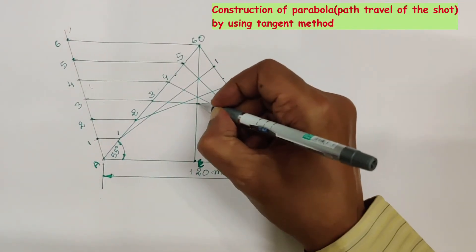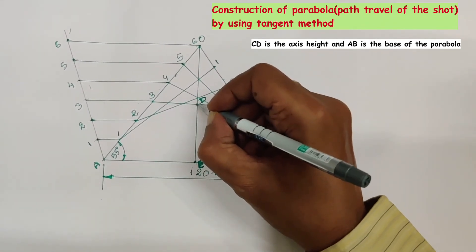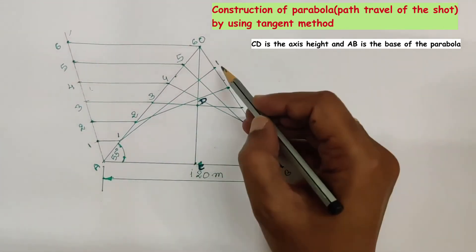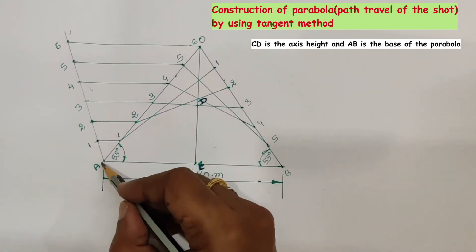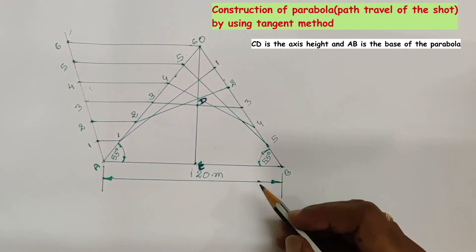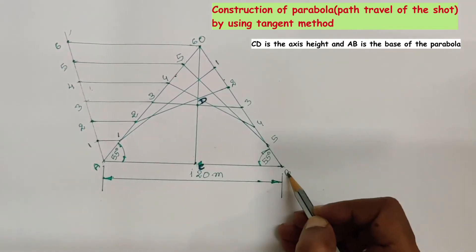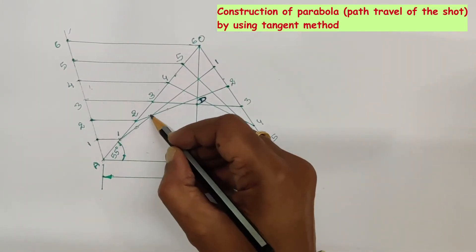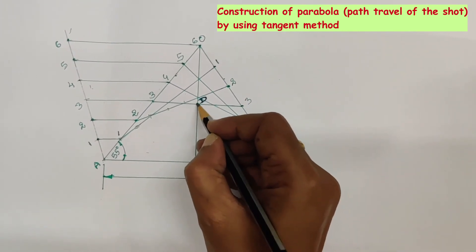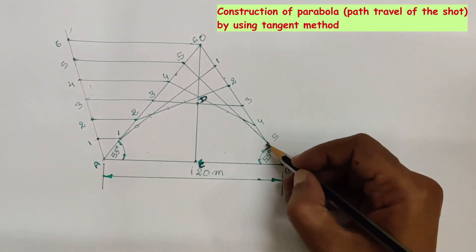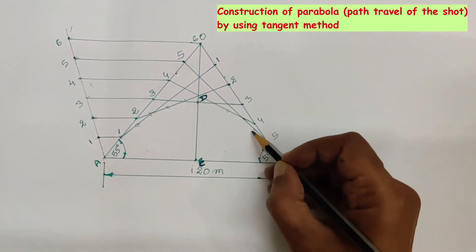Here point D is located and CD is the axis height of the parabola. With reference to the tangents 1-1, 2-2, 3-3, 4-4, and 5-5, we are going to draw the parabola starting at A and ending at B. The curve should not move outside the tangents — the curve needs to come inside the tangents. The midpoints of each tangent segment give us points P1, P2, P3, P4, and P5 respectively.